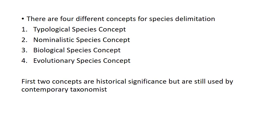The typological species concept majorly depends upon the morphology of the species — morphological parameters are considered in the typological species concept. The nominalistic species concept does not agree with the demarcation or delimitation of the species. The biological species concept gives biological meaning to every single character of an animal, and on the basis of those biological characters it defines the species.